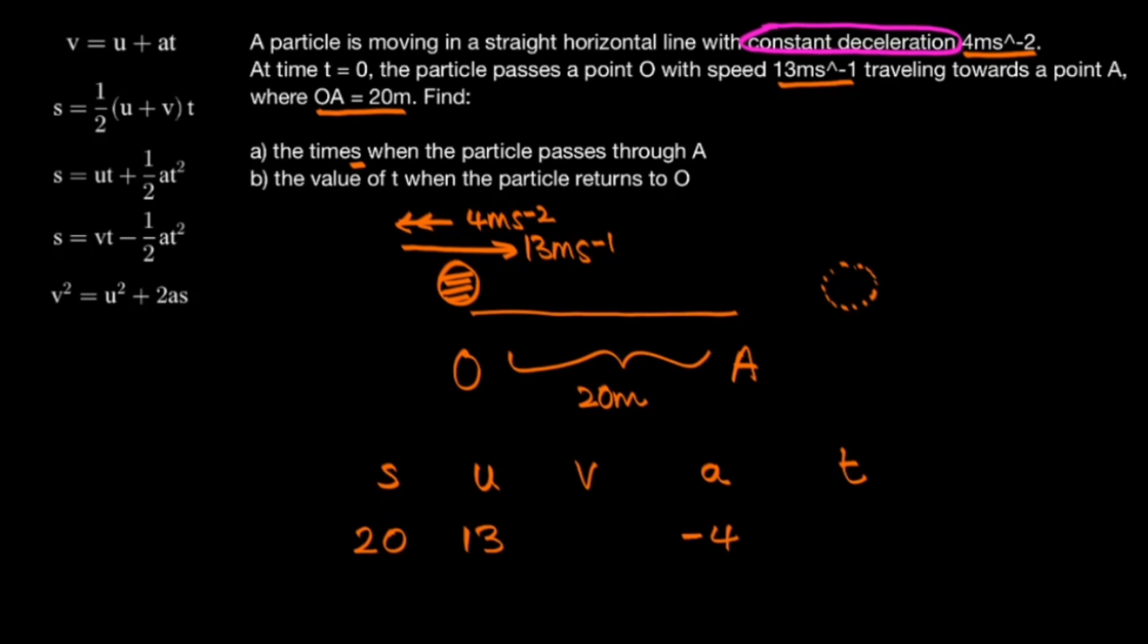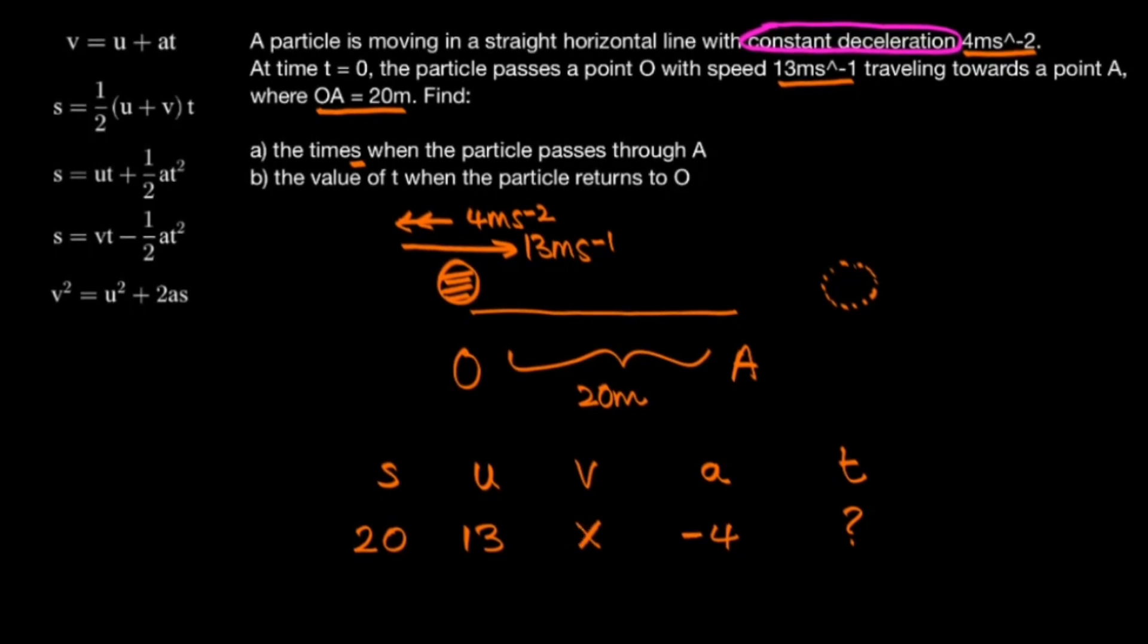The information that we want to work out is the time, and so we write a question mark below the letter T. And finally the last letter is V, and it's not really relevant to the question, so we can write a cross below it.